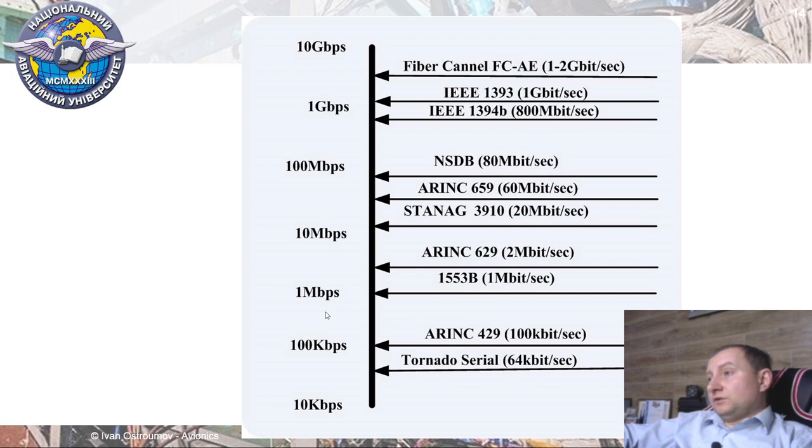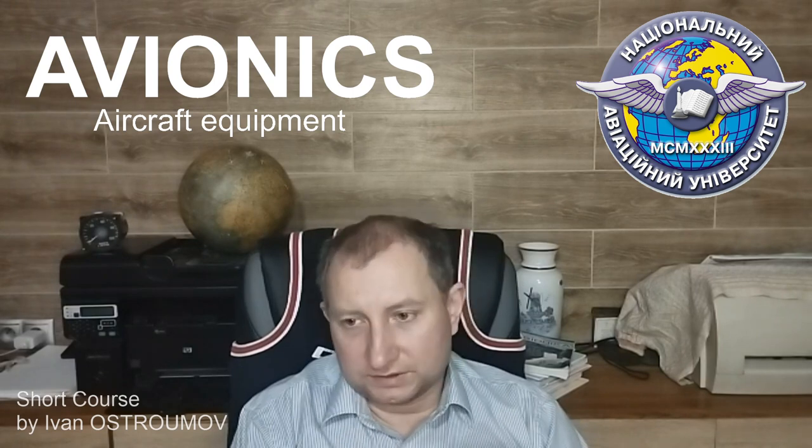That is all for today. Thank you for watching. I hope I answered the most basic questions related to the nature of digital data buses. Next we will talk about ARINC 429 and ARINC 629. This was avionics equipment of civil airplane — see you again a little bit later, bye.